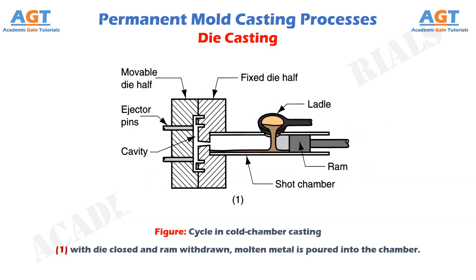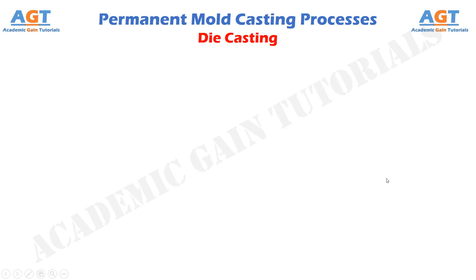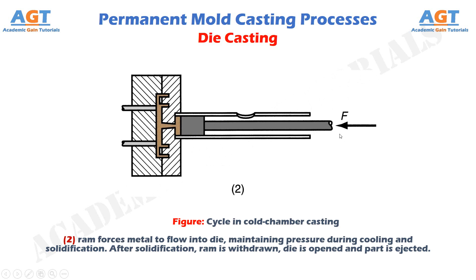Figure one shows the first step in cold chamber die casting, where with the die closed and ram withdrawn, molten metal is poured into the chamber. Figure two shows the second step, where the ram forces the metal to flow into the die, maintaining pressure during cooling and solidification. After solidification, the ram is withdrawn, the die is opened, and the part is ejected.